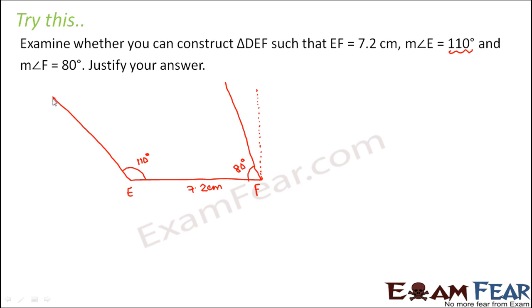Now you have to tell whether you can draw a triangle with these measurements or not. In order to draw a triangle, it is must that these two lines, that is this line and this line, they should intersect. Only then the point where they intersect, that point will become point D. But looking at this diagram, do you think that these two lines will ever intersect? They will ever meet for that matter? No.